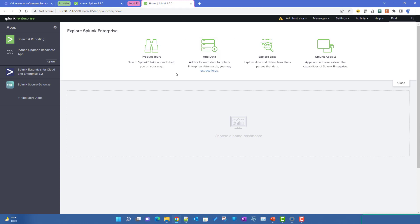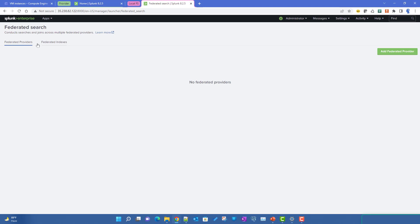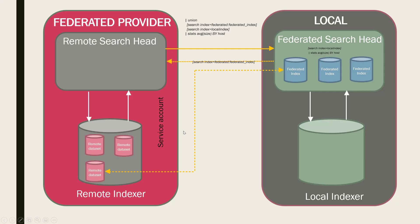If I go to Settings and then Federated Search, there are two tabs: Federated Providers and Federated Index. As we saw in the presentation, to set up federated search you need a federated provider, and in your local federated search head you also need to create a federated index which will point to a remote dataset.